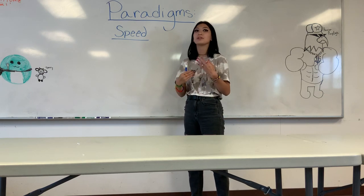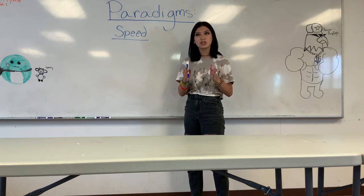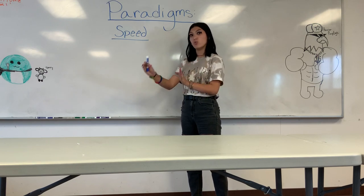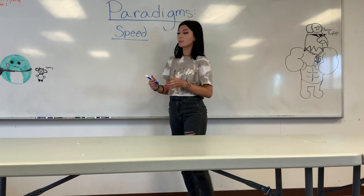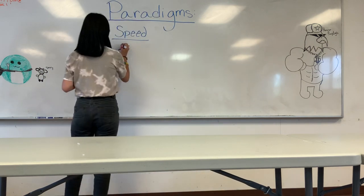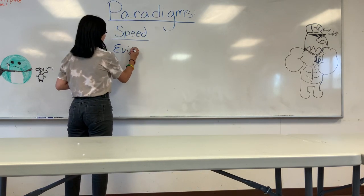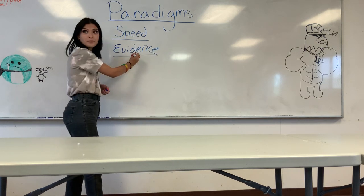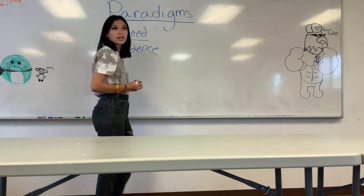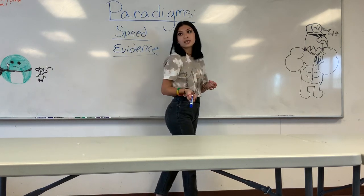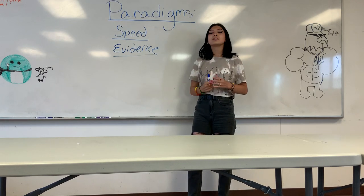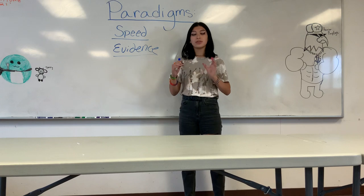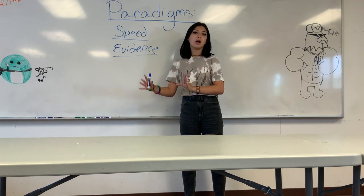Instead of speaking really fast where no one can understand you, try just slowing it down a little bit so that way they can get every single word. Another common paradigm that I see is also just evidence — proof is another way that this is said. So when a judge says that they're going to have an evidence paradigm, it means that if you make a claim, you have to have evidence with a cut card to back it up.